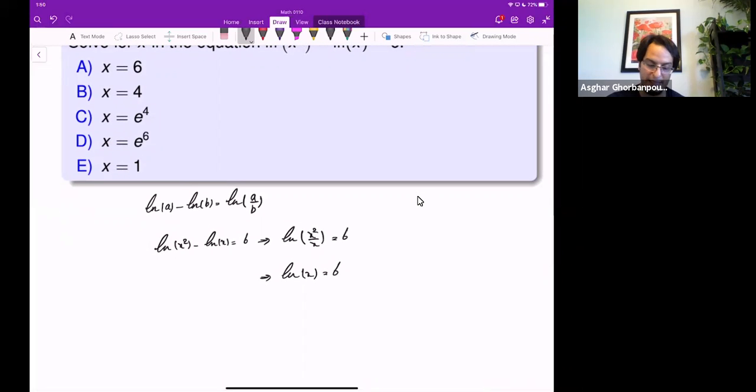Now that we are getting there, ln is log base e. So to get rid of ln, put both sides of the equation in the exponent of e.